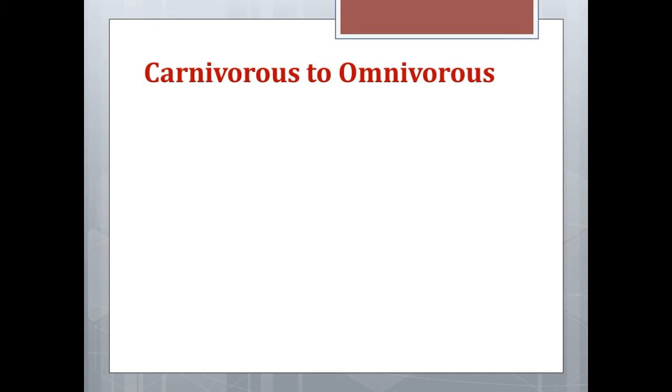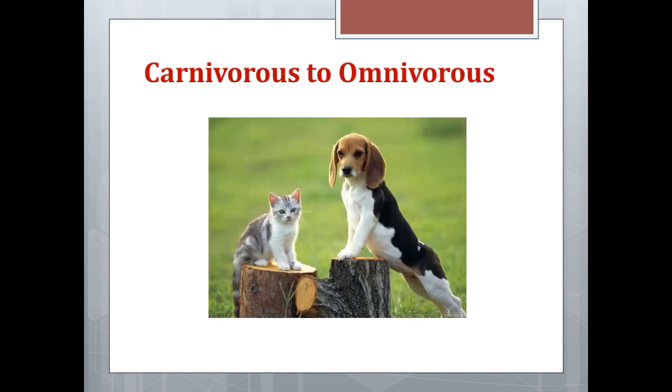But here you should note that some carnivorous animals have become omnivorous because they live with us human beings. For example, cat and dogs. They are basically carnivorous but they have become omnivorous since they live with us.